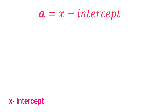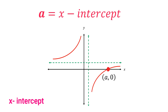The x-intercept, denoted by 'a', comes from the point on the graph which lies on the x-axis. It is the x-coordinate of the point whose partner y-coordinate is 0, since the point lies on the x-axis.